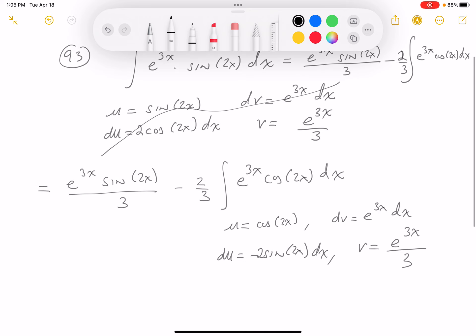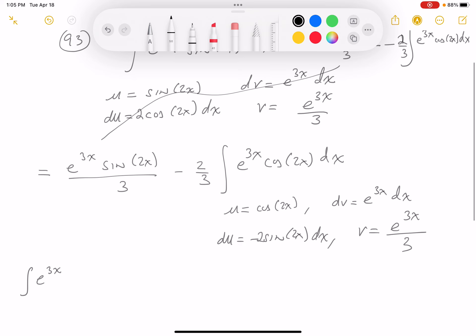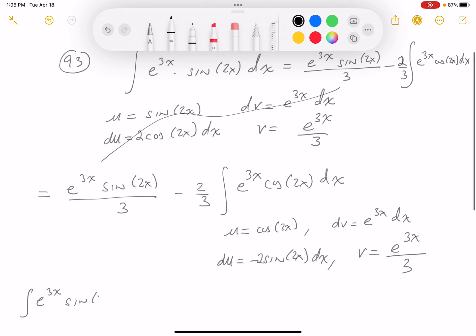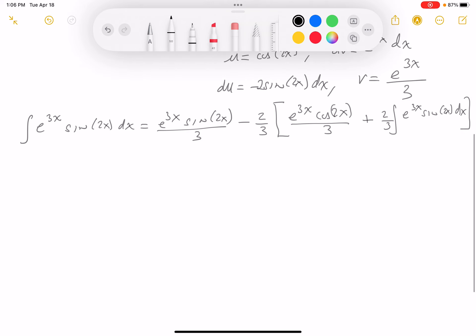All right, let's keep writing. The integral of e^(3x) sin(2x) dx equals e^(3x) sin(2x) over 3—that's uv—and then minus vdu. So that's going to be e^(3x) over 3, and then I see this minus 2, so I'll put plus 2 there, and that's going to be sin(2x) dx. That's a lot to jam in there.